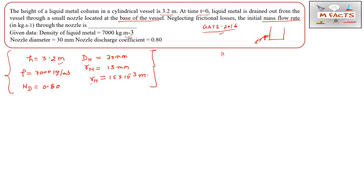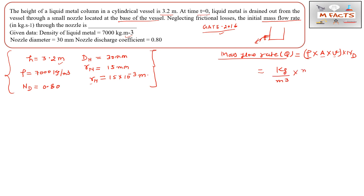The mass flow rate Q equals density ρ multiplied by area A, multiplied by velocity V, multiplied by the nozzle discharge coefficient Nd. Checking units: ρ is in kg/m³, area in m², and velocity in m/s — giving kg/s, which matches what the question asks for.